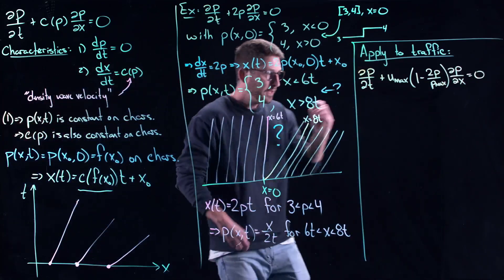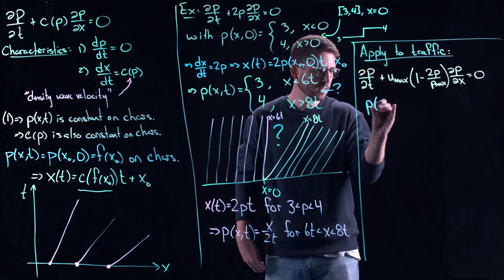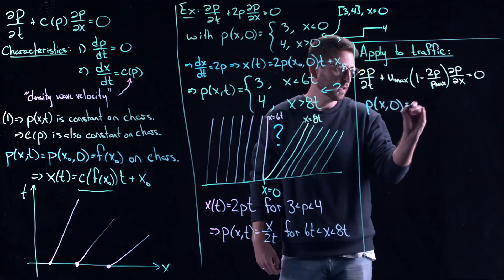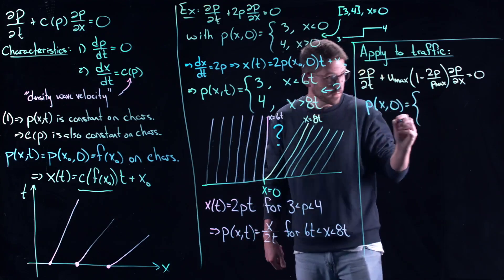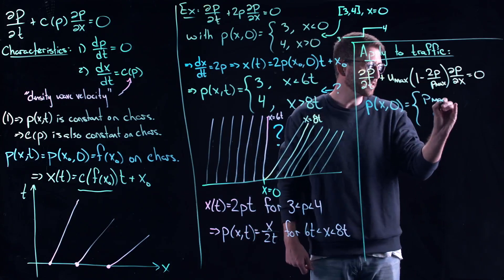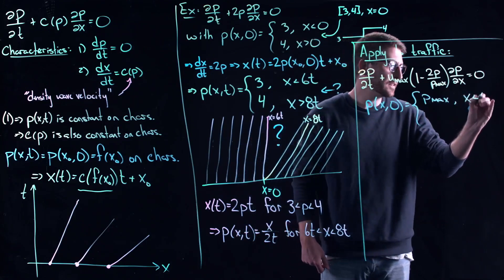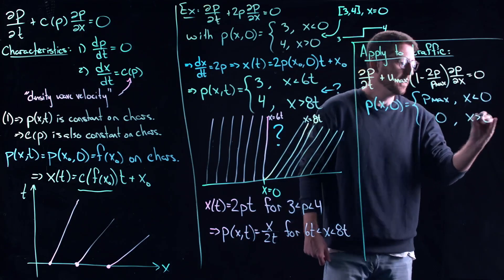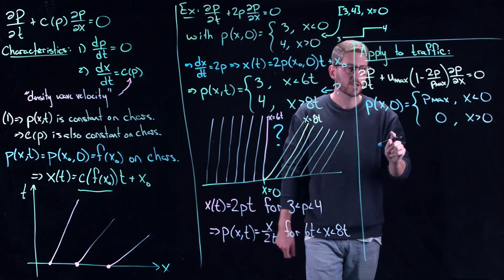Here's my initial density, ρ(x,0). It's ρₘₐₓ for x less than 0, and it's 0 ahead. Here's how I'm thinking about this initial condition: sitting at a red light at x equal to 0.